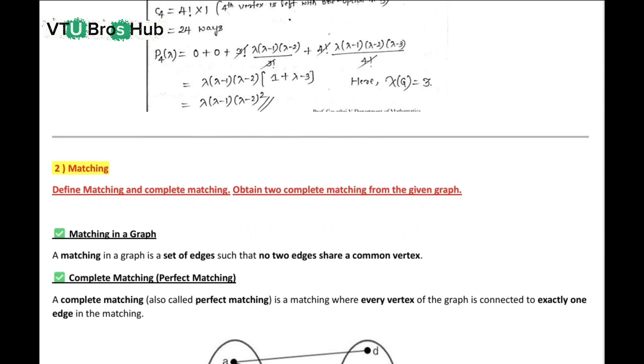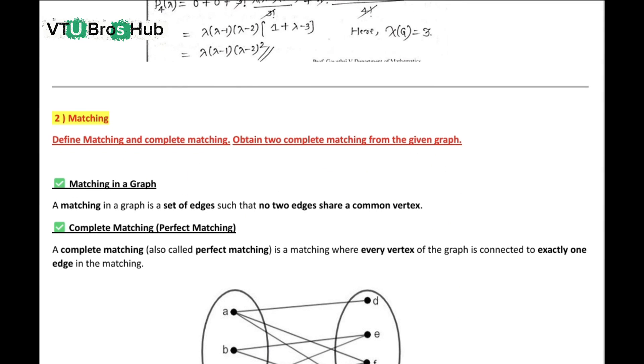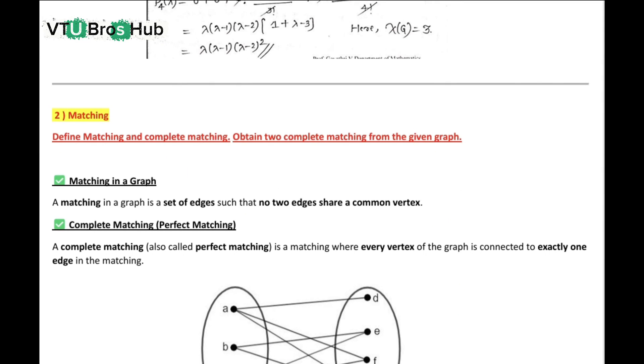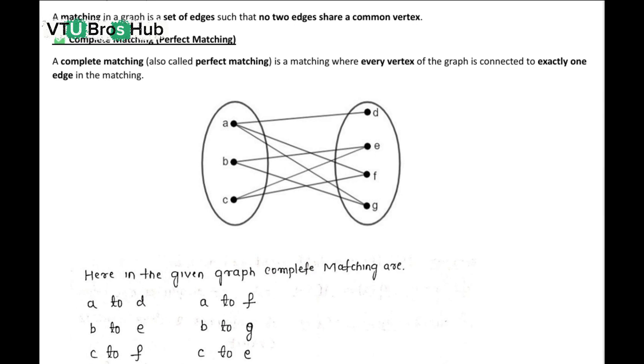Define matching and complete matching. What is a matching in a graph? It is a set of edges where no two edges share a common vertex. This avoids overlapping connections.